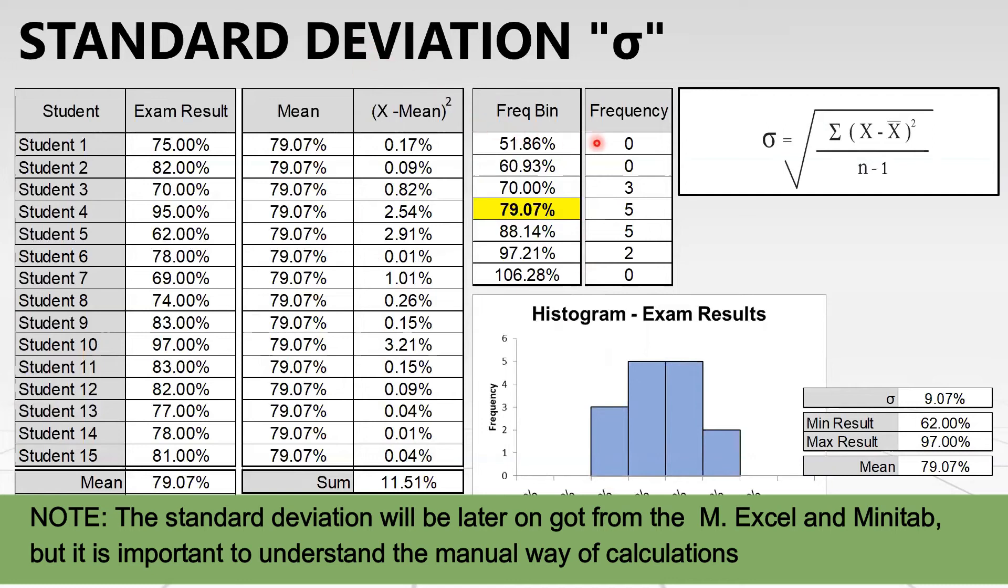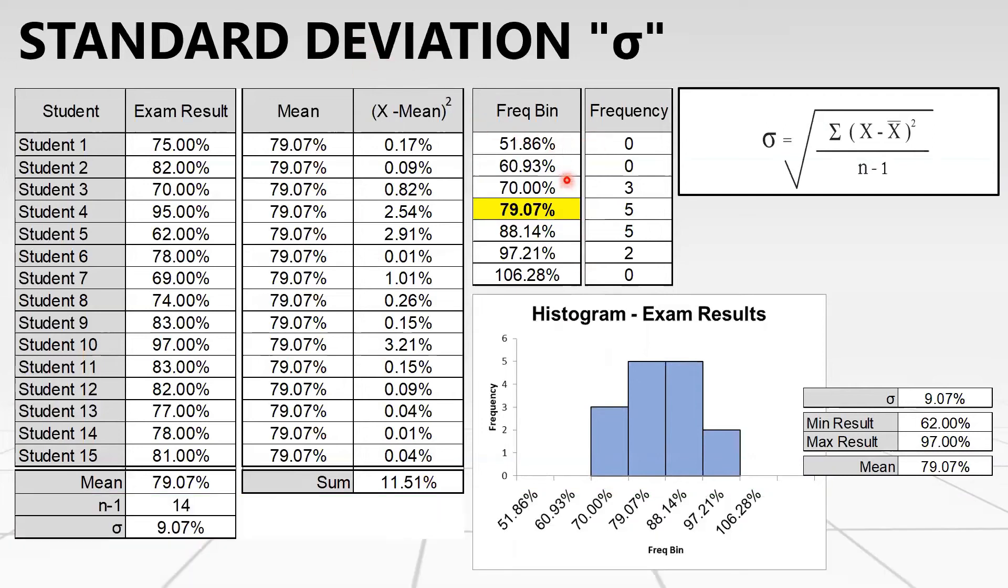Now we will count all the numbers that are dropping between each bin and plot them in our table. If I want to know how many students got scores between 51% and 60%, we will find zero. Between 60.9% and 70%, we find three. Between 70% and 79%, we find five. And it's a matter of plotting those data in our histogram. Based on that, we will have our histogram or data distribution.